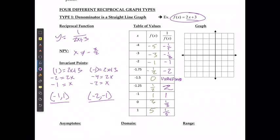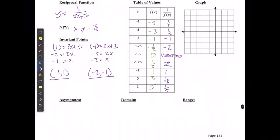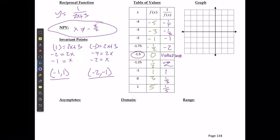Now we know what the asymptotes are based on our non-permissible values or where our graph is undefined. So the asymptote is going to exist at x is equal to negative 3 over 2, or I could say negative 1.5 because this one is exact, it doesn't really matter.